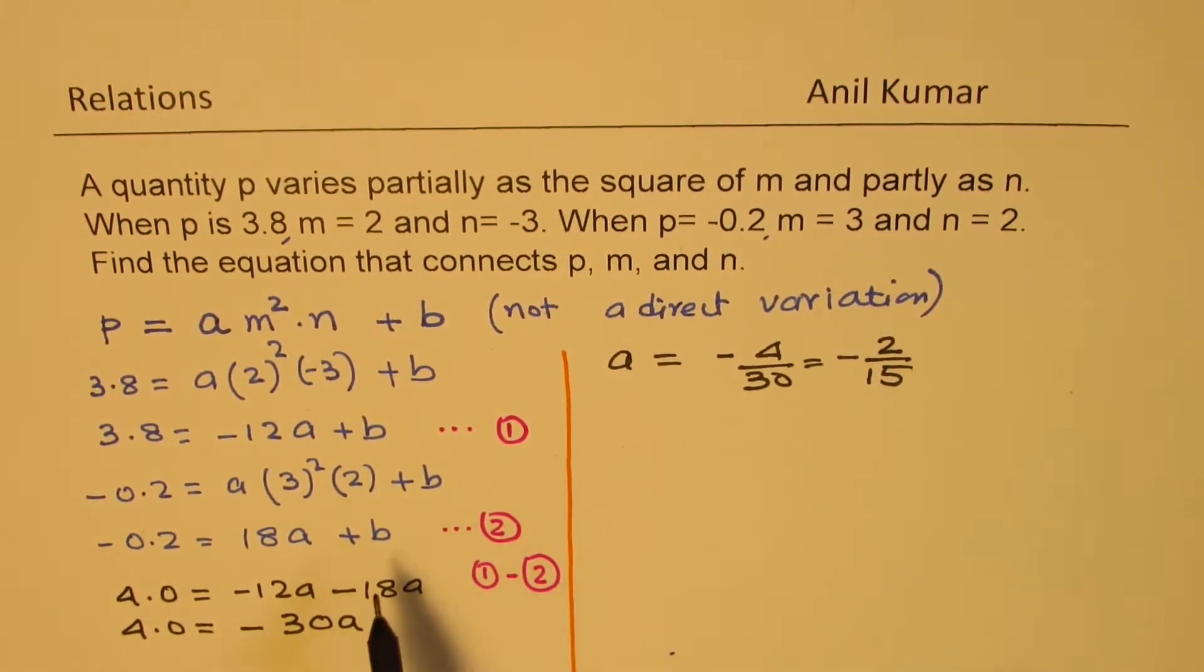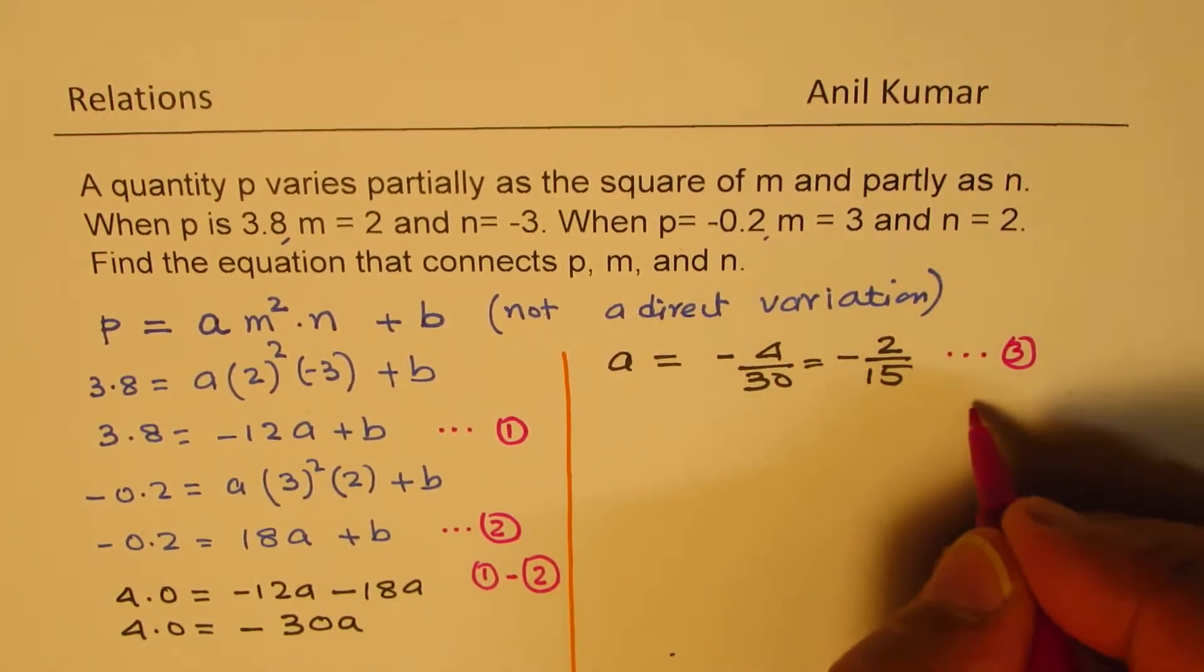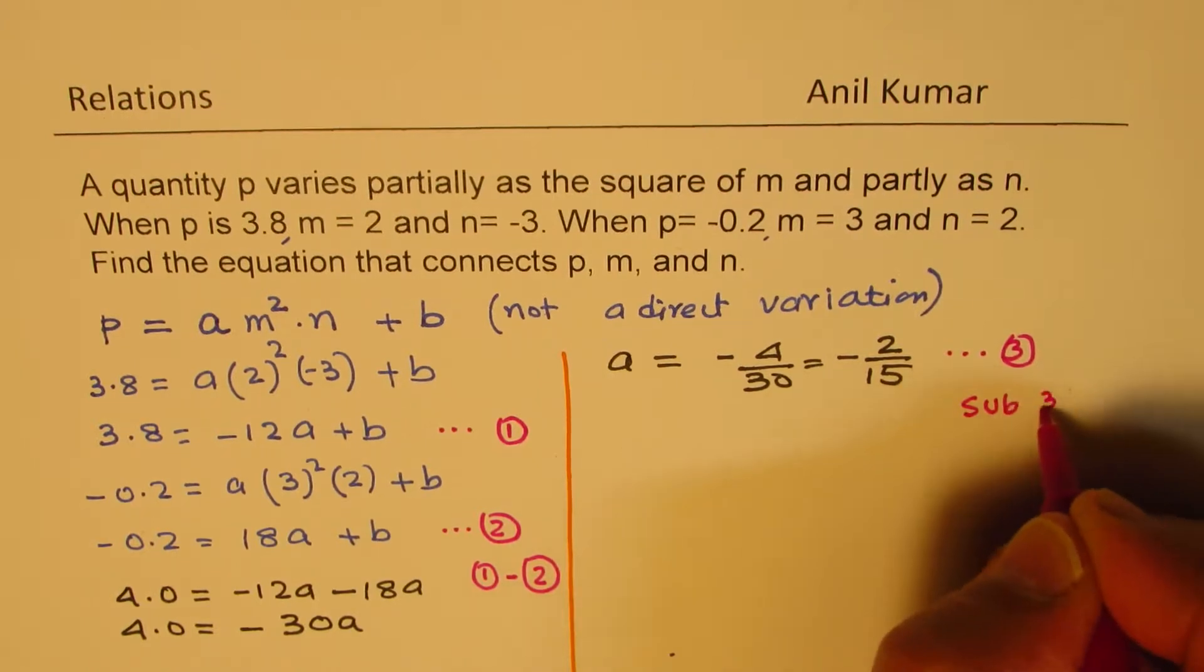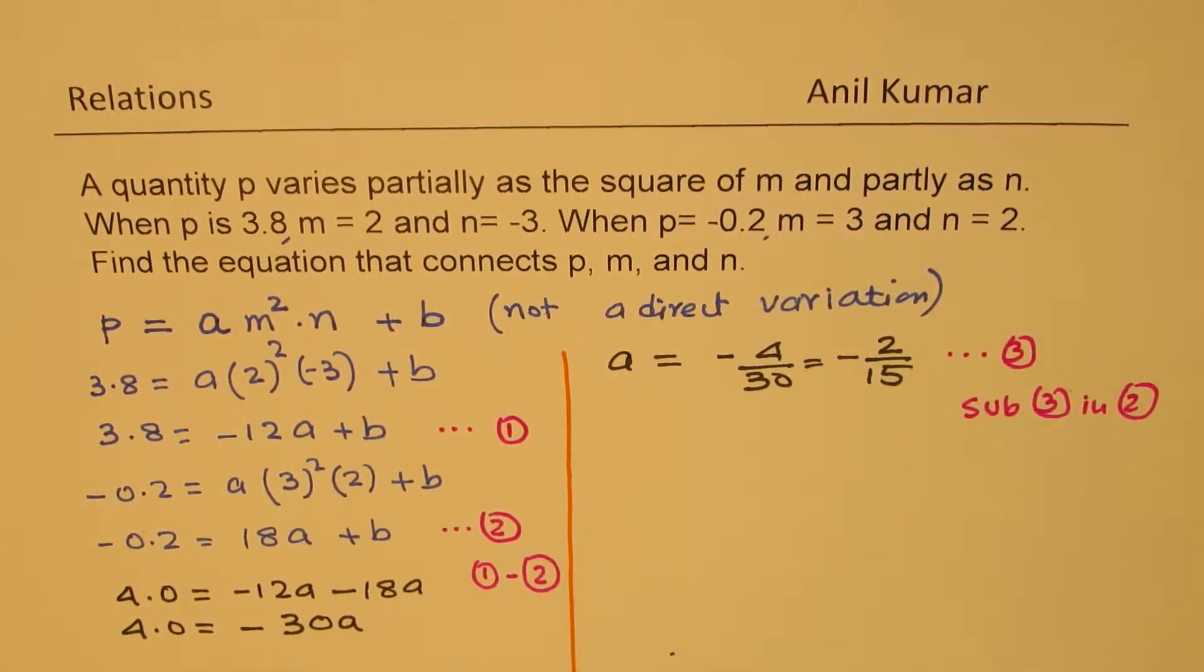Now we can substitute this value of A to find the value of B in any one of our equations. So let's use the second equation. Let me call this as our equation number 3. So we will now sub 3 in 2 to find the value of B.